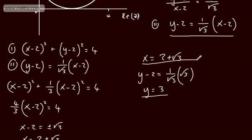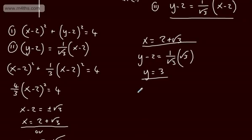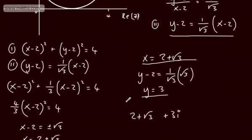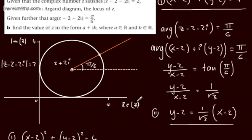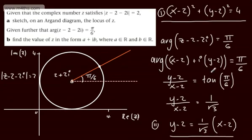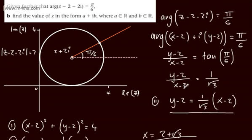So there's my x value and my y value. This in the form a plus ib can be written as 2 plus root 3 plus 3i — and that's going to be this point just here. So the value of a is 2 plus root 3, the value of b is 3, and we've found the value of z. That's one way of doing the question. You can also work by using geometry: pick the point 2, 2, you've got an angle of pi by 6, find the tan of that and work from there. This is just one approach.